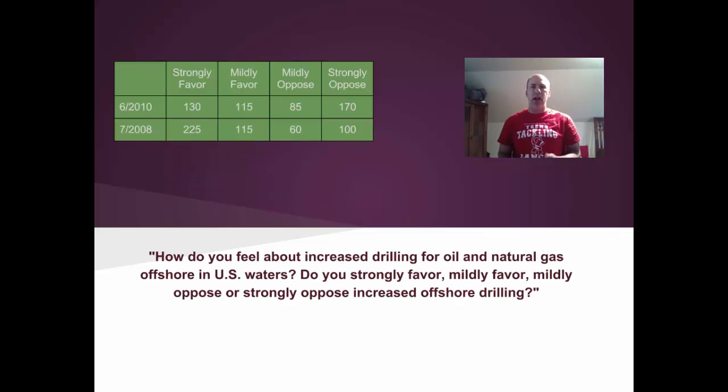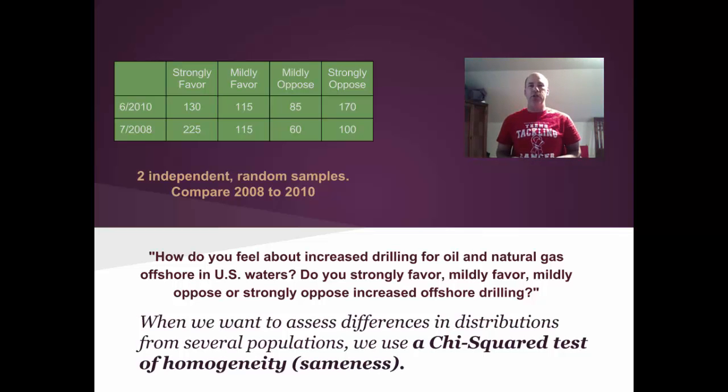Here we're given an example of a survey about increased drilling for oil and natural gas offshore in U.S. waters, whether people favor or oppose it. Note that the data is given to us in a two-way table, data from two different years, 2008 and 2010, and we would like to compare the distributions. So we have two independent random samples from 2008 and 2010, and we want to assess differences in distributions from several populations. We use a chi-square test of homogeneity, and homogeneity just means sameness. So we want to see if 2008 and 2010, if the opinions were the same, or if they differed in some way.